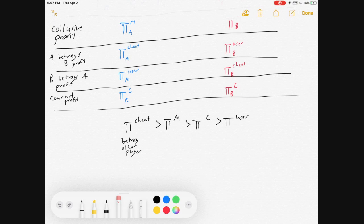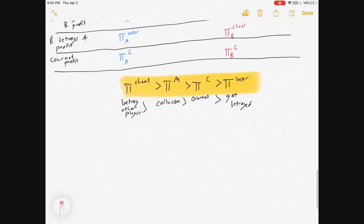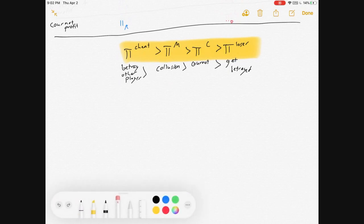So, betray the other player has the highest, even more than collusion. Collusion has more than competing via Cournot, and Cournot has more than being betrayed. That order is also important to us, because the fact that cheating pays more than colluding, at least for one period, gives us some temptation to want to break away from any collusive behavior.